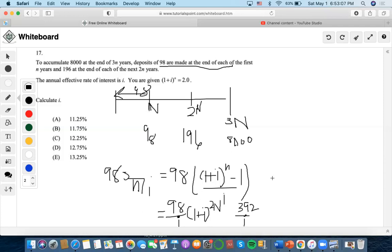Now we are going to take the 196 future value at 2N, because there are a stream of payments of 196. So we're going to do 2N here. So it would be 1 plus I to the 2N this time.